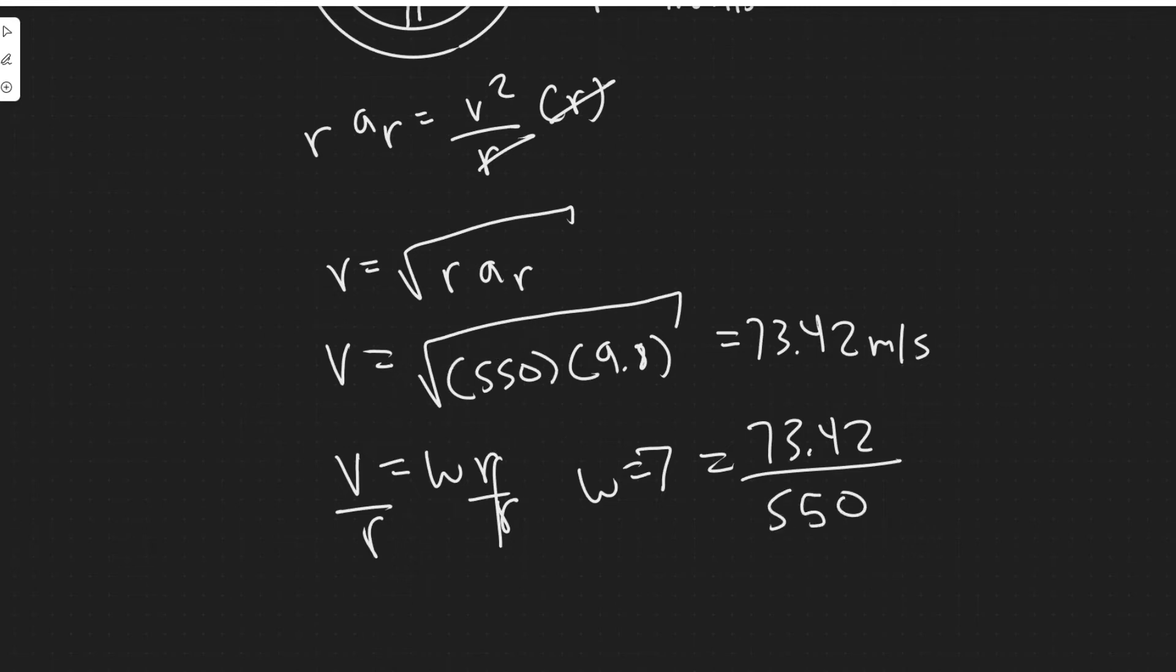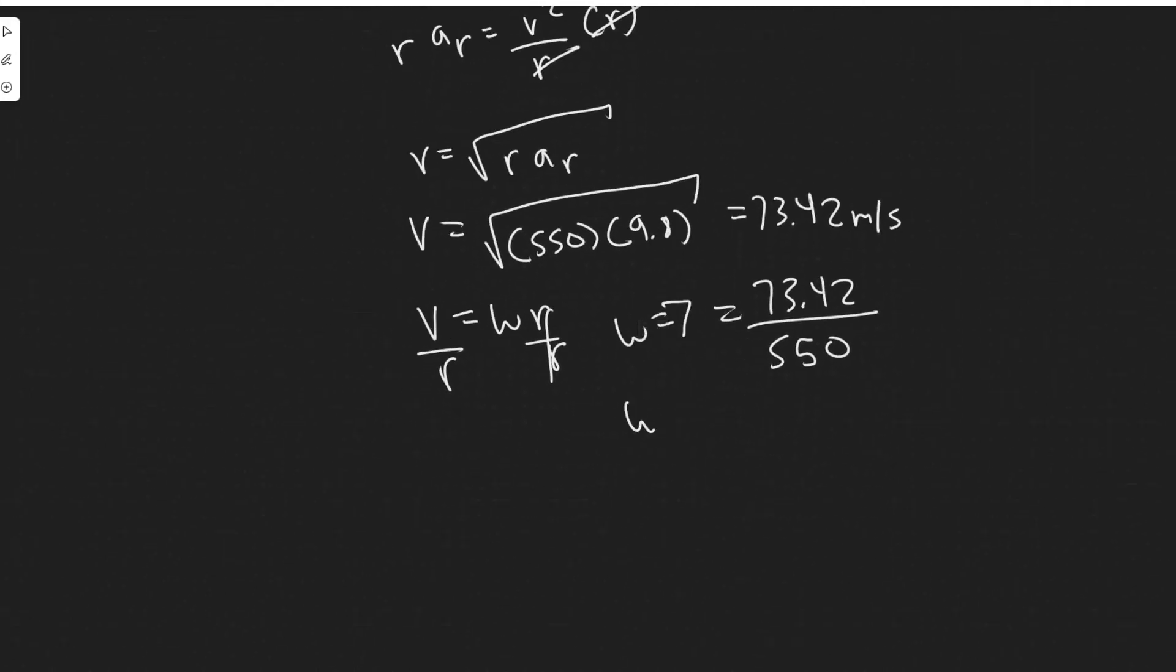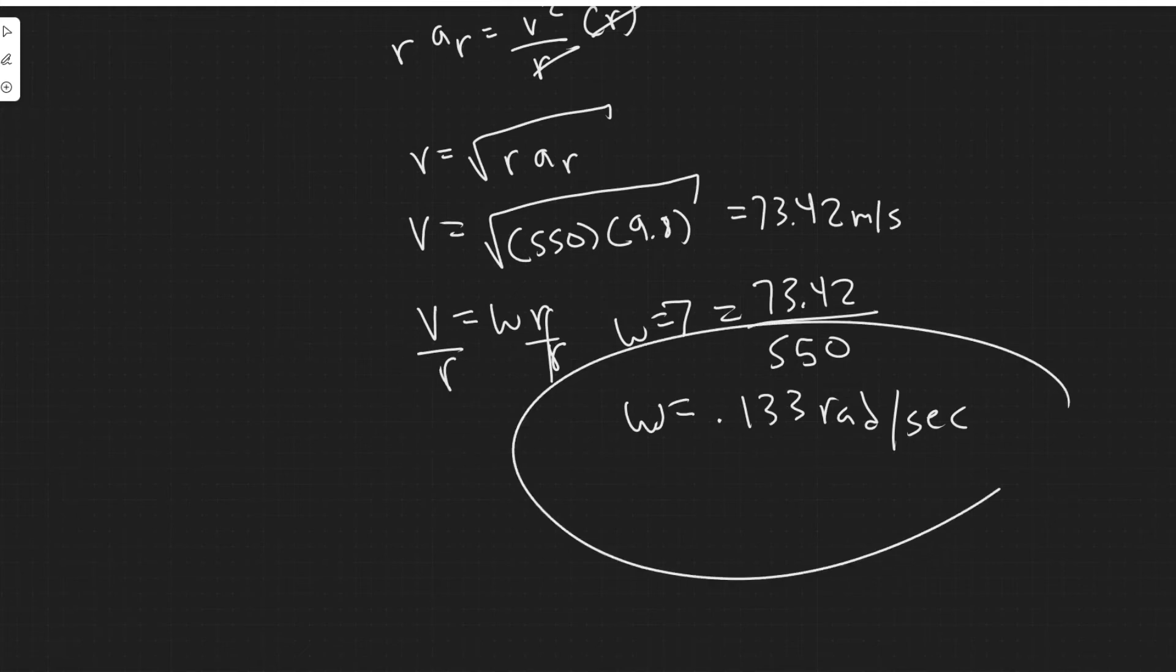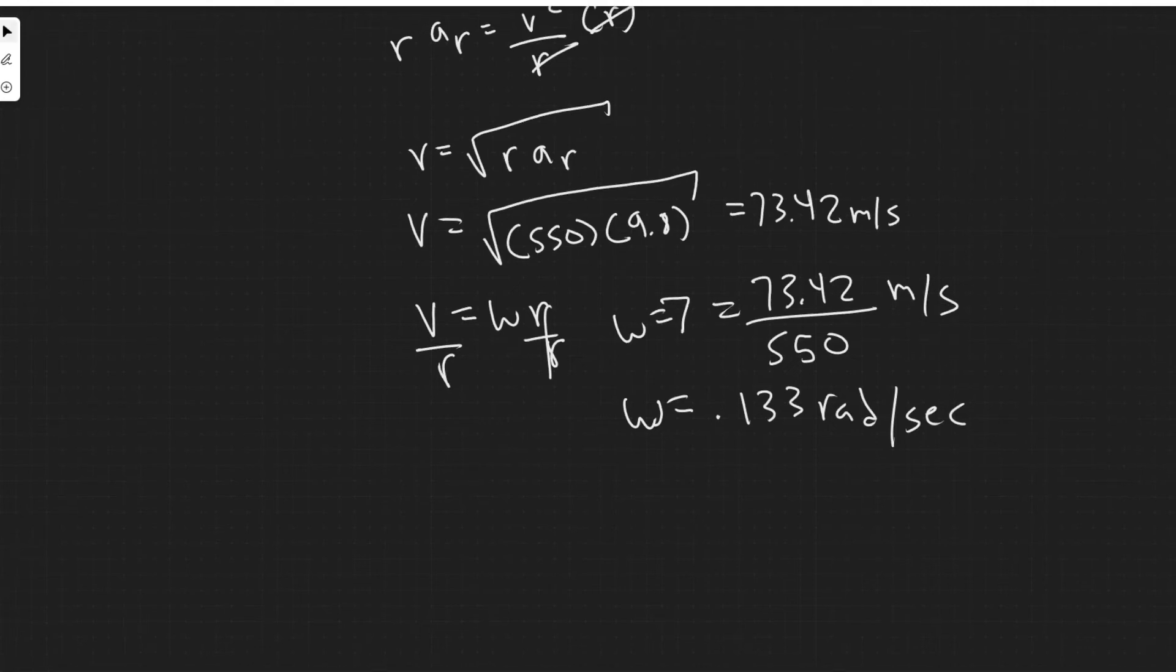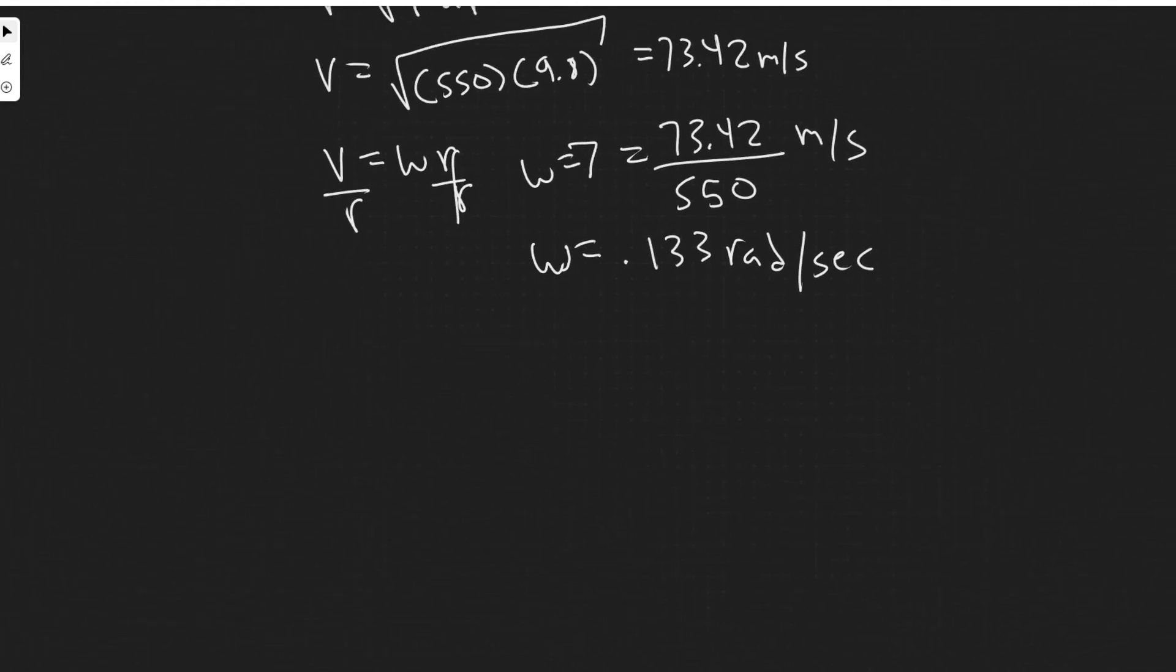So plugging that in now, you are going to get omega equals 0.133. And then the units, when you do this, is going to be radians per second. So just know that when you do this with meters per second and meters, you get radians per second. And that's essentially because you have meters per second, and then you're dividing by meters. So these will cancel. And then if you're unitless, it essentially means radians.